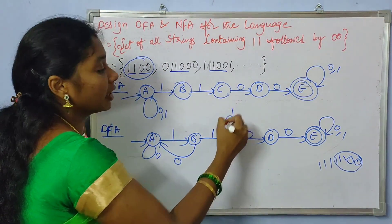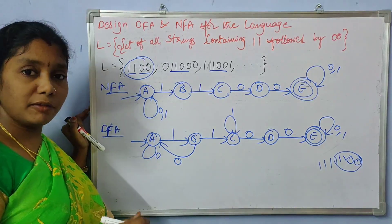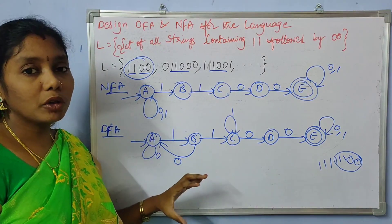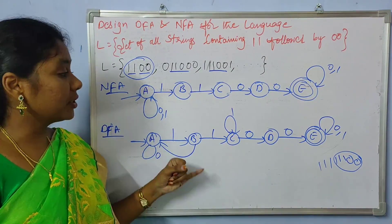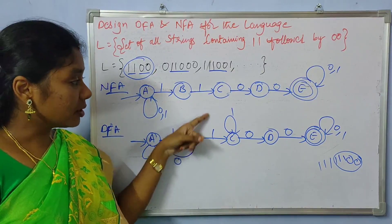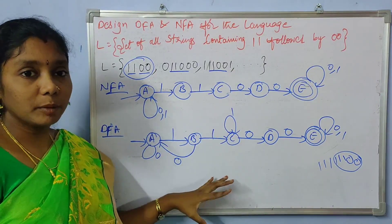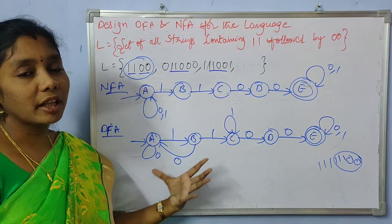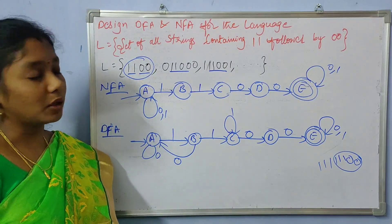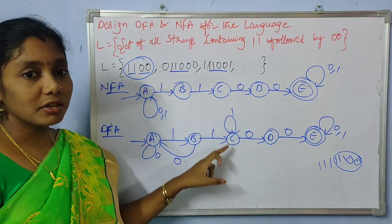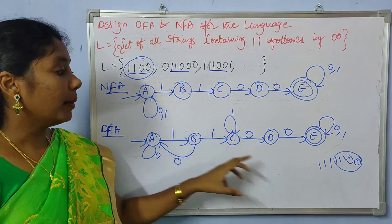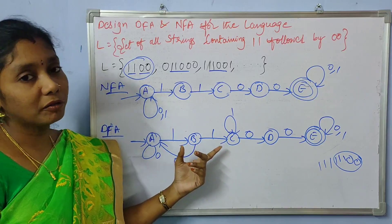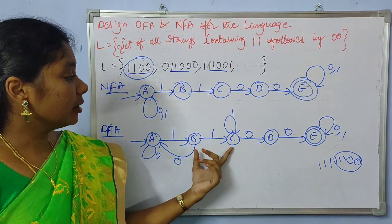We can take a self-loop of one here. In DFA construction we can choose different possibilities — self-loop, other state transitions, or a dead state connection. There is a possibility of self-loop. If we have any one transition needed, we can choose self-loop. Here we can take self-loop of one.